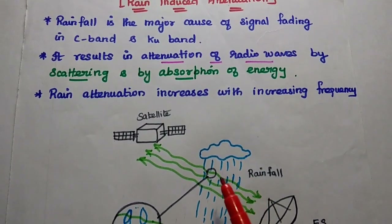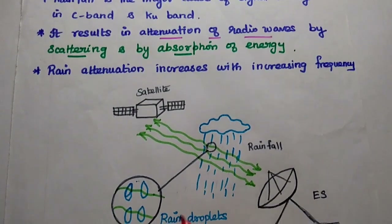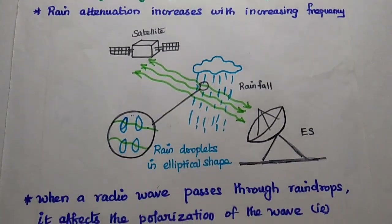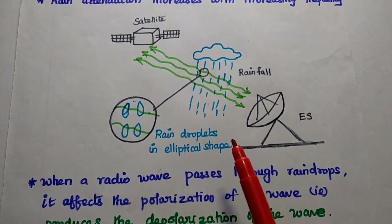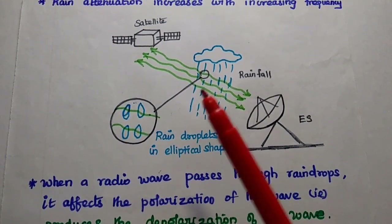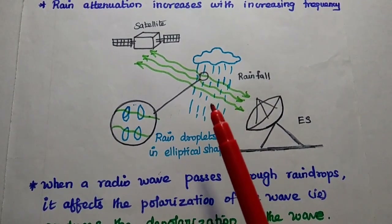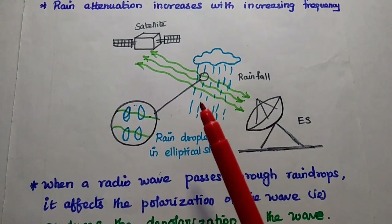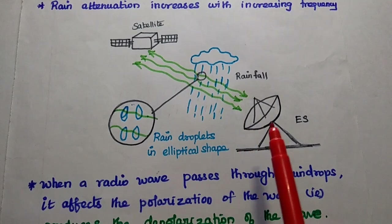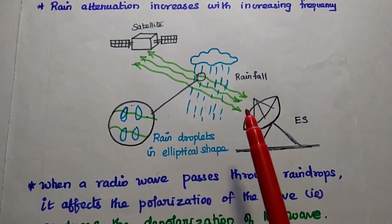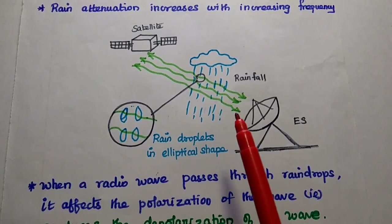Rain attenuation in the KU band is worse than the C band. Considering this diagram, we can model the rain droplets in an elliptical shape. The radio waves from the satellite arrive in some arbitrary polarization form, and when they pass through these rain droplets, it affects the polarization of the wave, producing a depolarized wave.